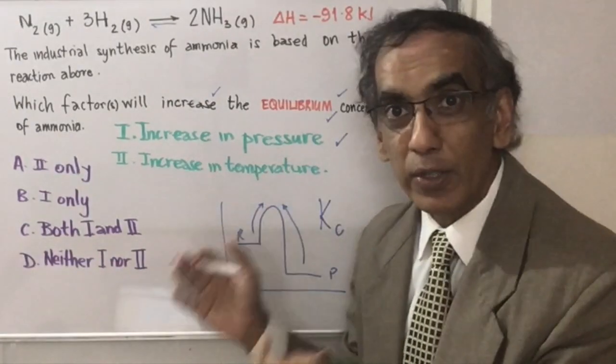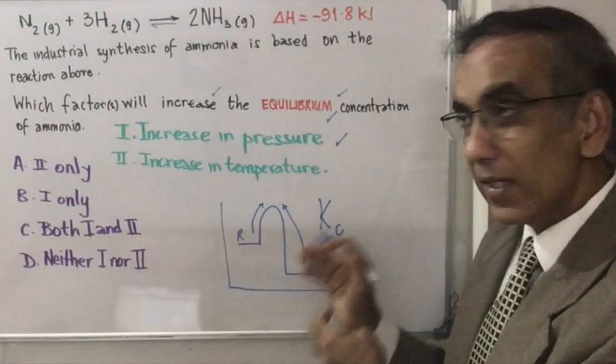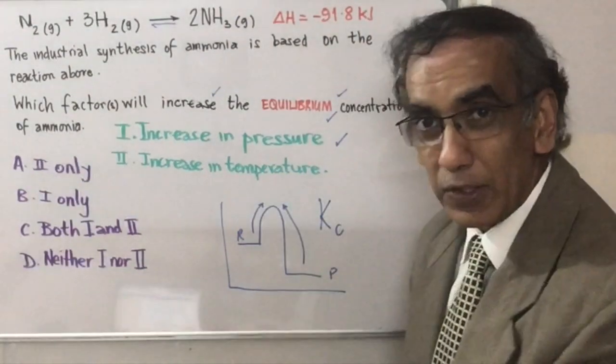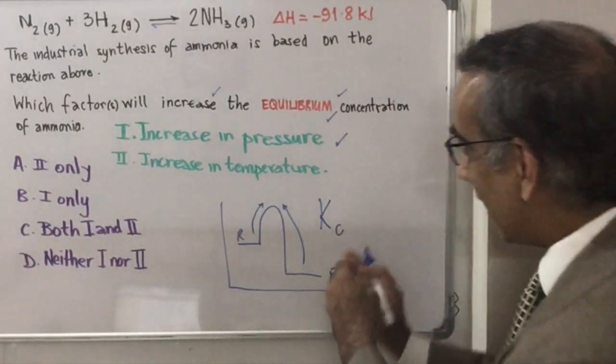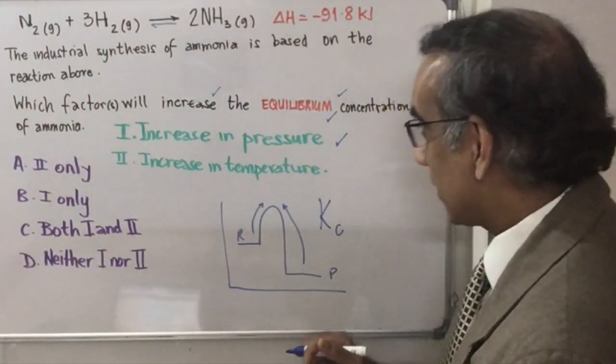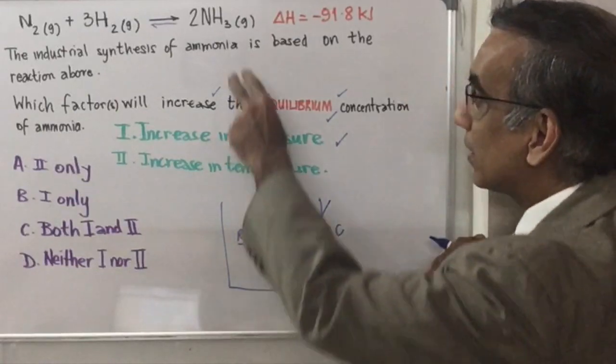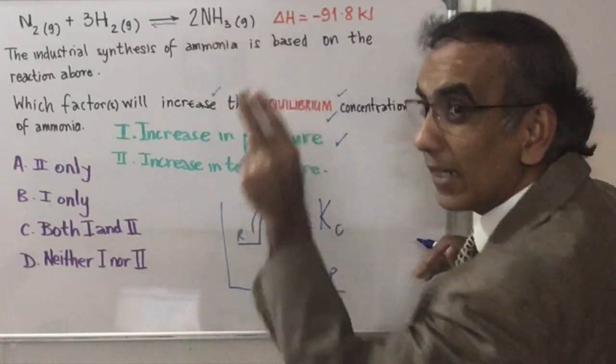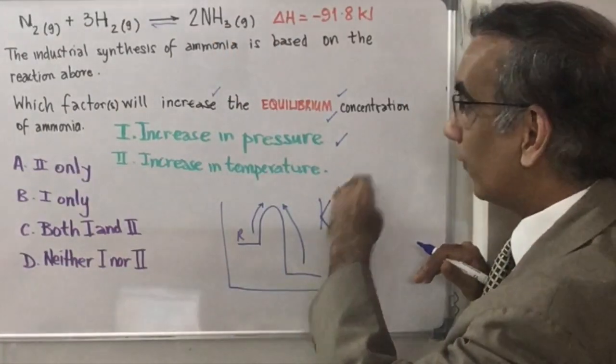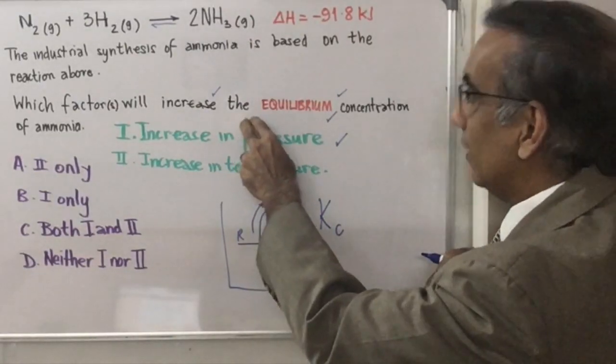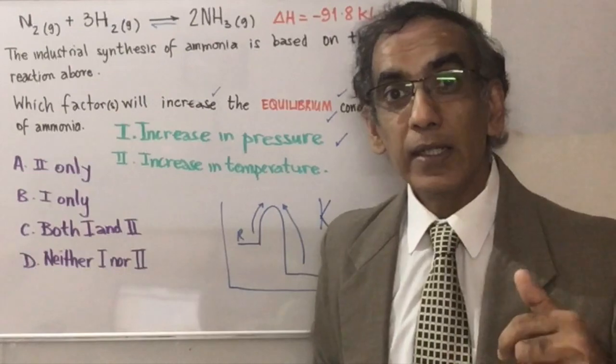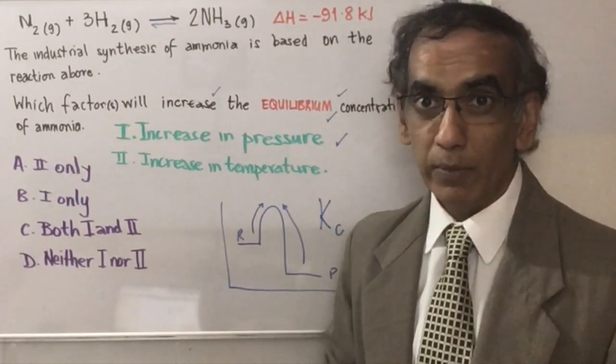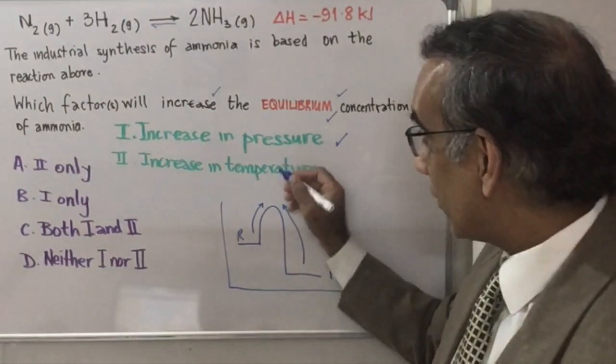So increasing the temperature in this system, where the reverse reaction is endothermic with the bigger barrier to cross, would favor the reverse process. If it favors the reverse process, the concentration of ammonia at equilibrium is going to fall. So it would not lead to an increase in the equilibrium concentration. In fact, it would lead to a decrease in the equilibrium concentration.